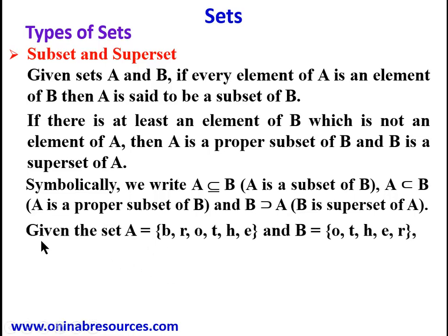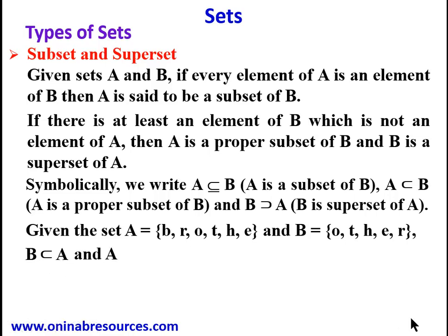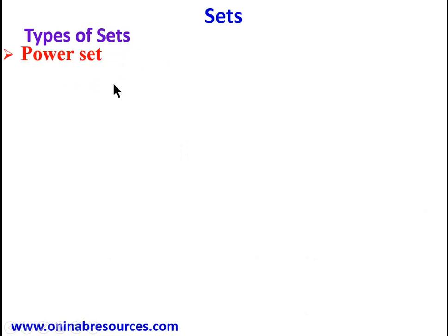Here is an example. Given A = {b, r, o, t, h, e} and B = {o, t, h, e, r}, then B is a proper subset of A, since all elements of B are in A, but there is 'b' in A that is not in B. Therefore B ⊂ A, and A is a superset of B.